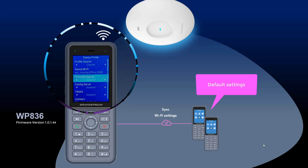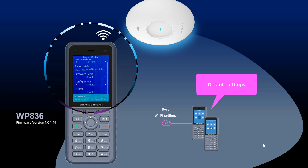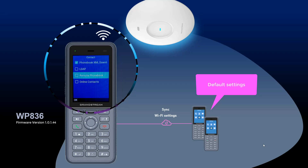There are other basic settings that you can synchronize using the batch deployment feature, such as information about the provisioning server, firmware server, and phonebook download URL.